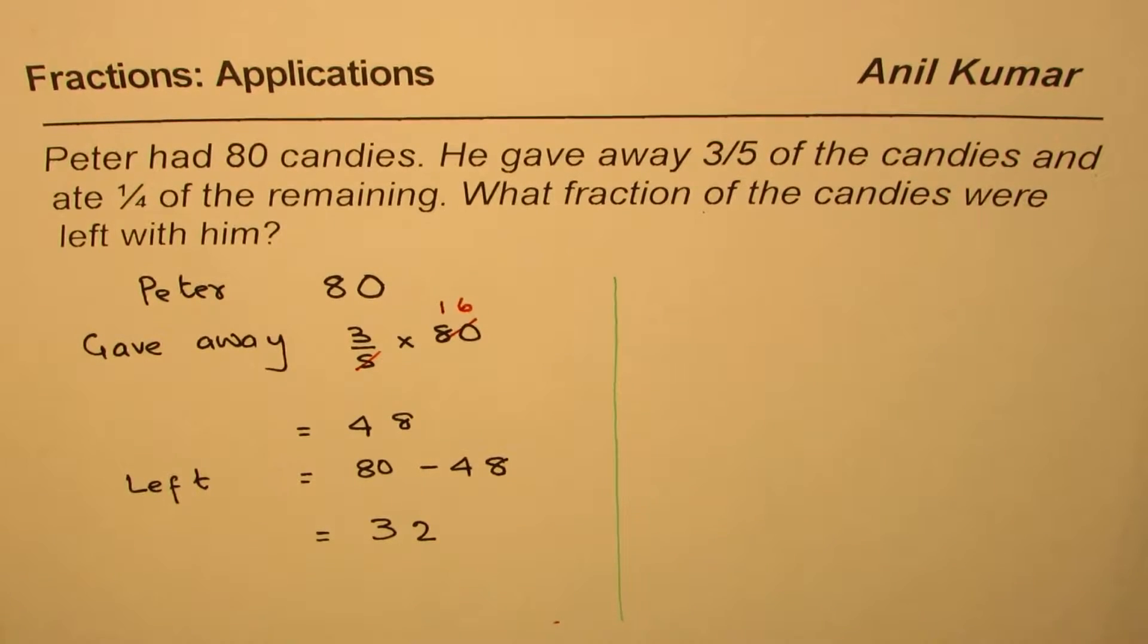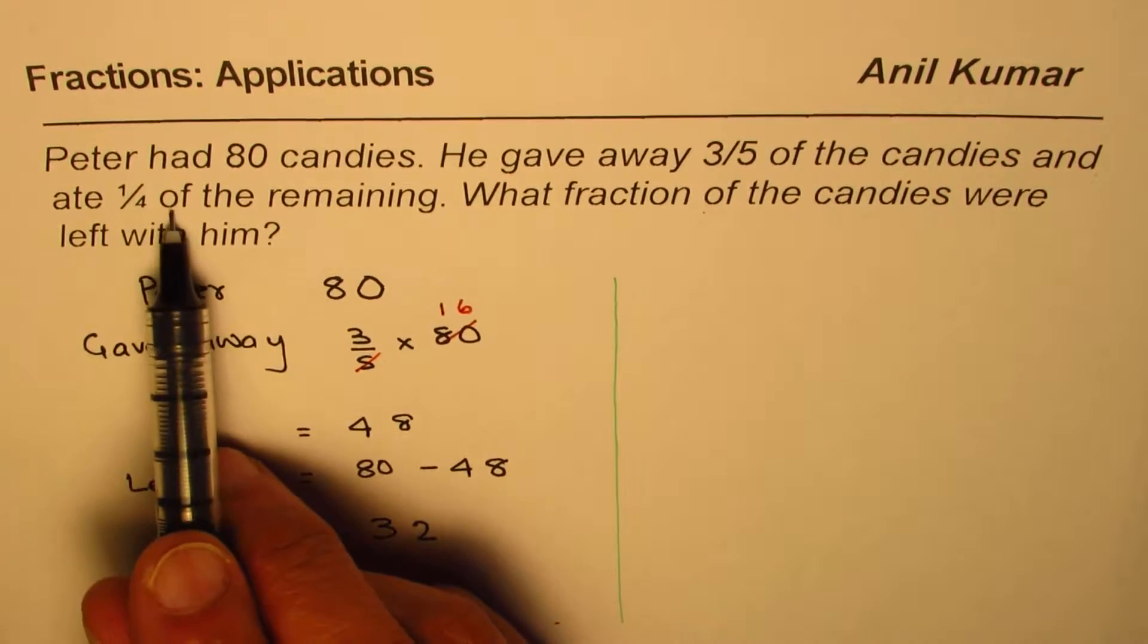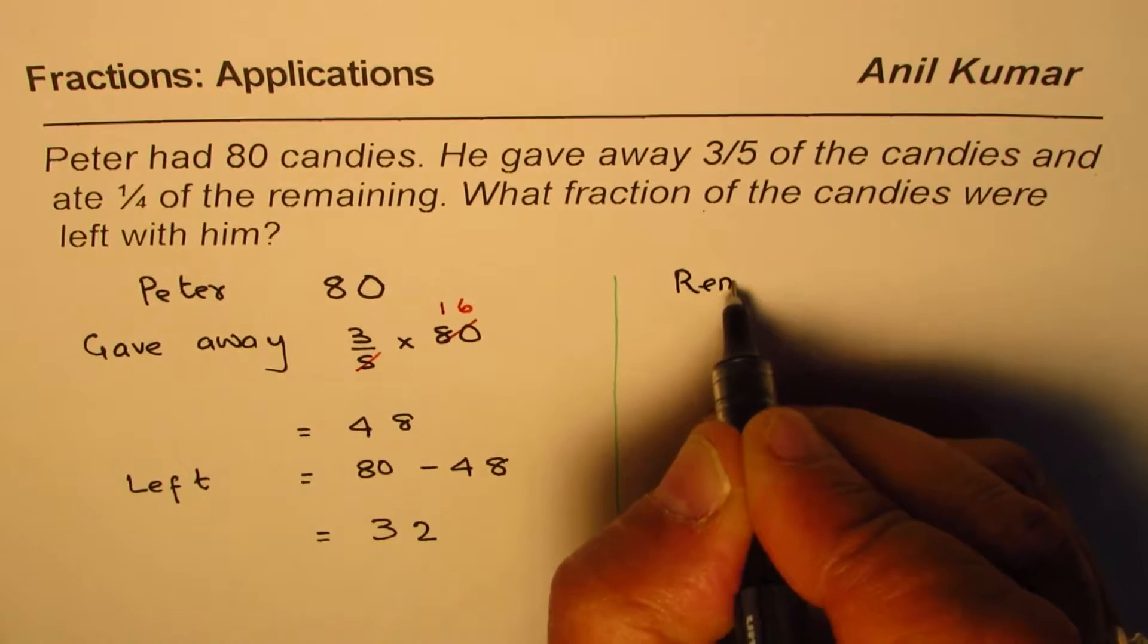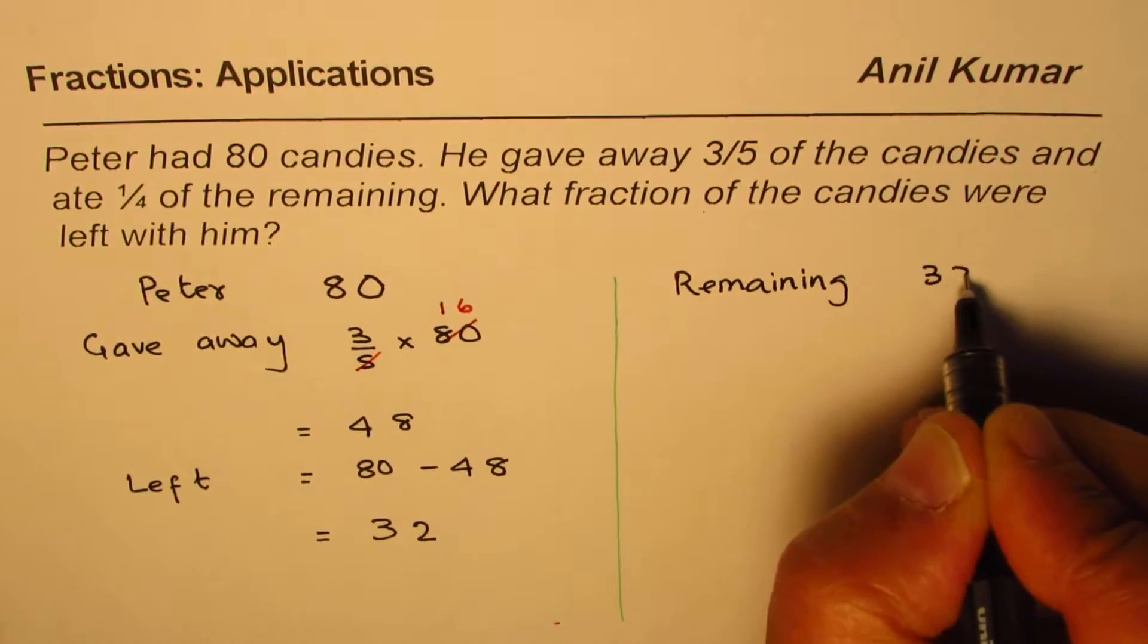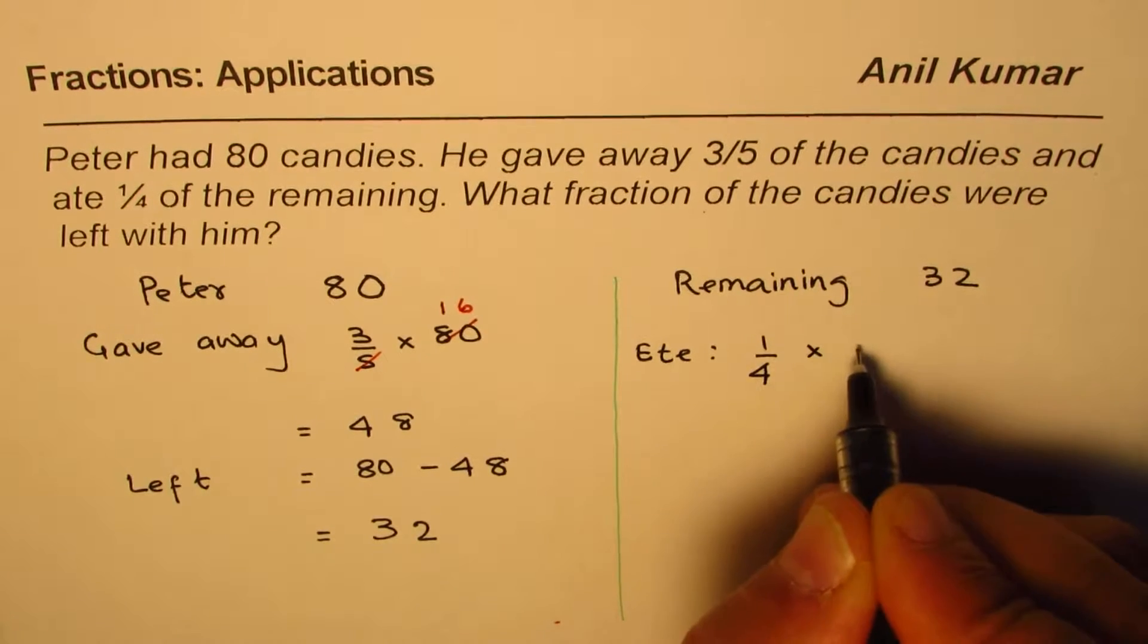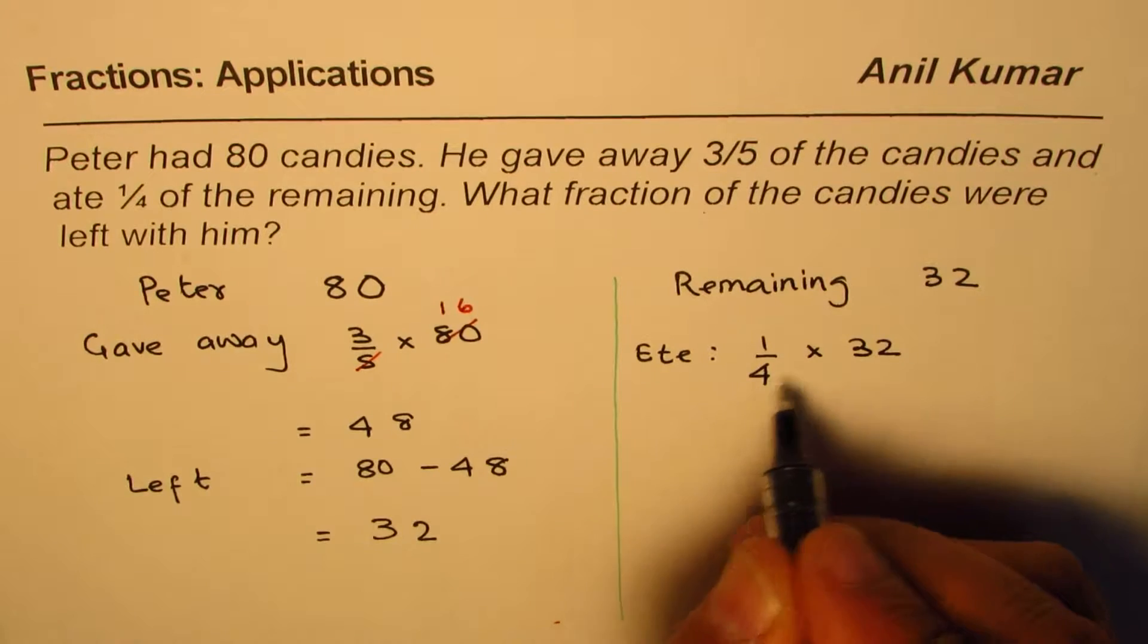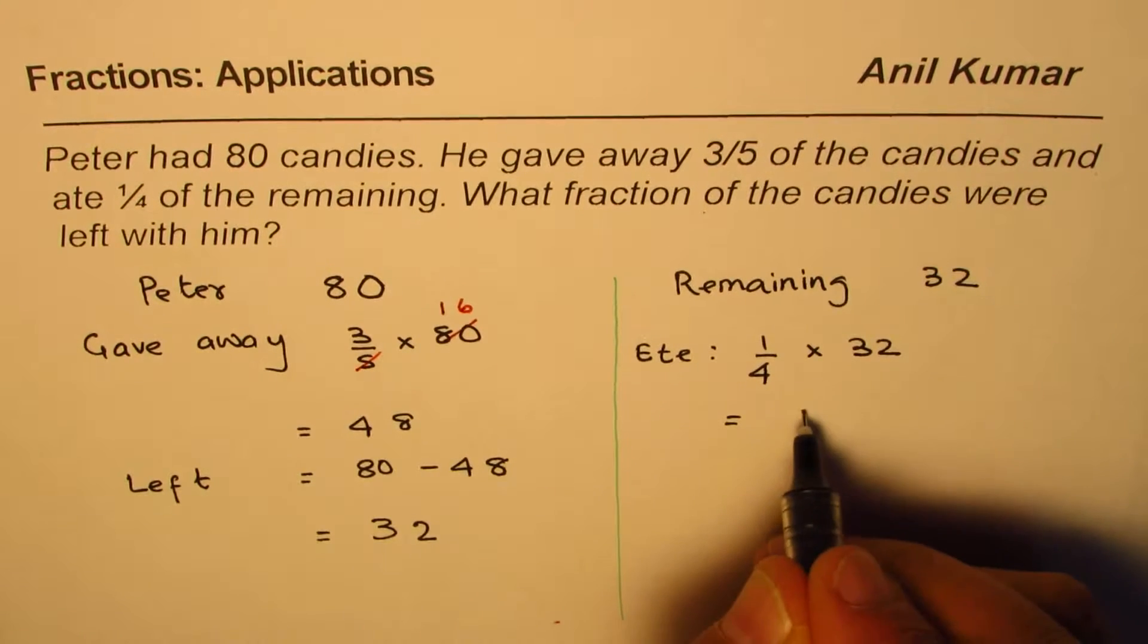So we have done up to this stage. Now let's continue. Now it says he ate 1/4 of the remaining. So the remaining candies were 32. Now he ate how many? 1/4 means 1/4 of 32, which means times 32.